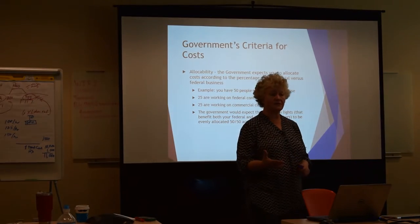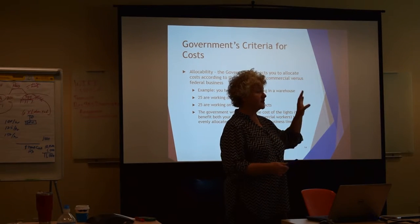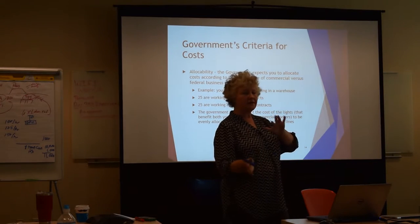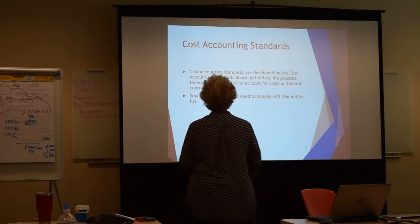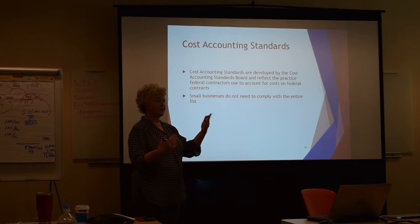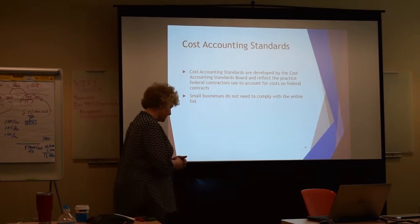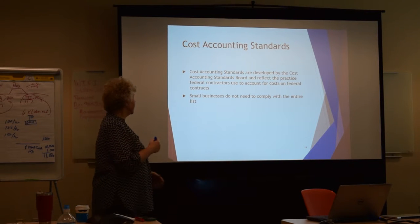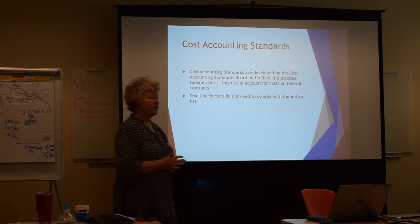Some companies try to game the system — they take all their commercial costs and push them over to the government side, or vice versa: they take all their federal costs and push them to the commercial side because the federal market is so competitive. That's not allowed either way. And then there are Cost Accounting Standards. These are things that big businesses have to comply with — many more of them than small companies. These standards are established by the Cost Accounting Standards Board and reflect the practices that contractors use to account for costs on a federal contract.